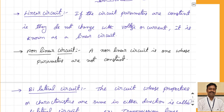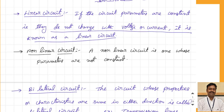Let us now see what is a linear circuit. If the circuit parameters are constant — meaning they do not change with change in voltage or current — it is called a linear circuit. That means whenever you change the voltage, the current will change linearly, and the relationship between voltage and current is linear. If you are changing the voltage and the current is changing linearly with a constant slope, then we say the circuit is a linear circuit. If this does not happen, then the circuit is called a non-linear circuit.